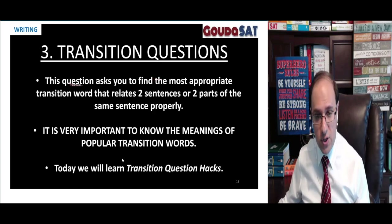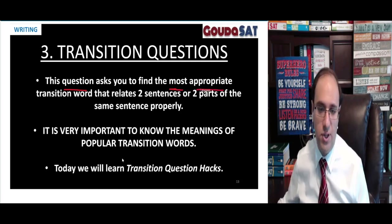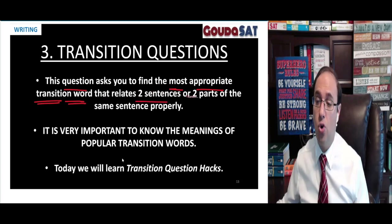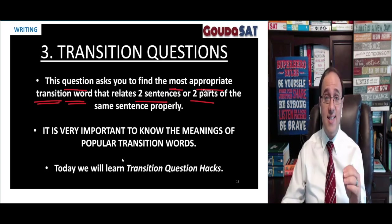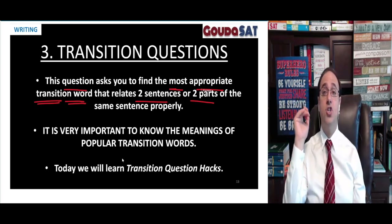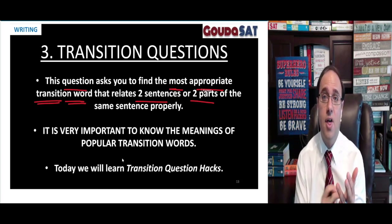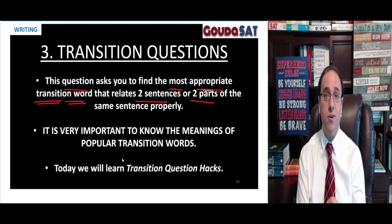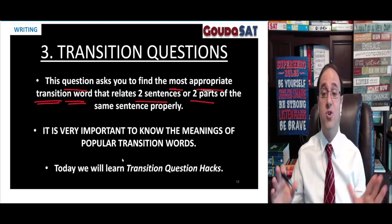Transition questions. This question asks you to find the most appropriate transition word that relates two sentences or two parts of the same sentence properly. You will be asked to choose the best transition word from four choices. Transition words such as although, therefore, because, thus, however, for example, for instance, also, moreover, furthermore, and so on — these are called transition words.